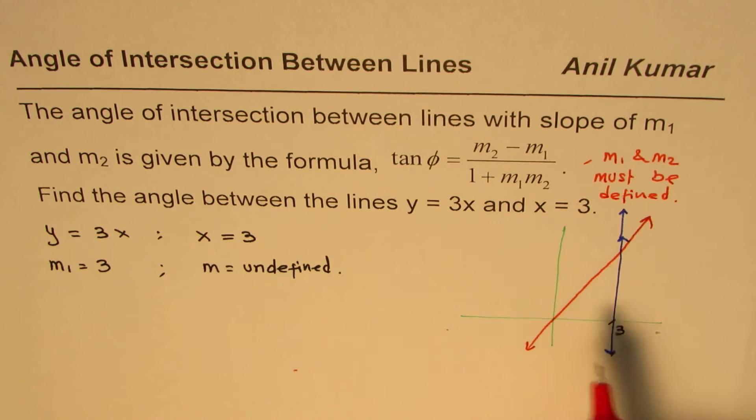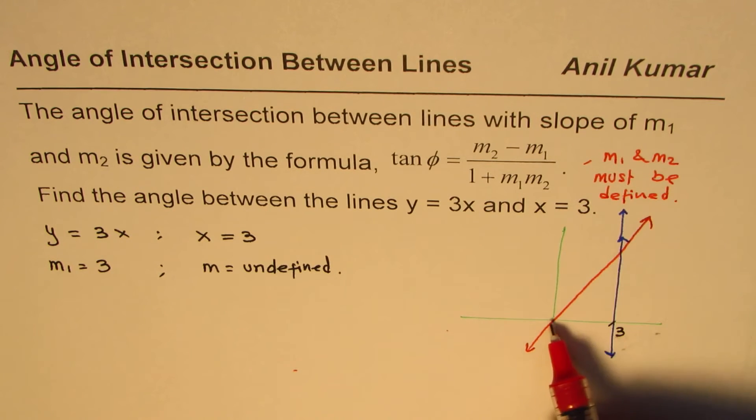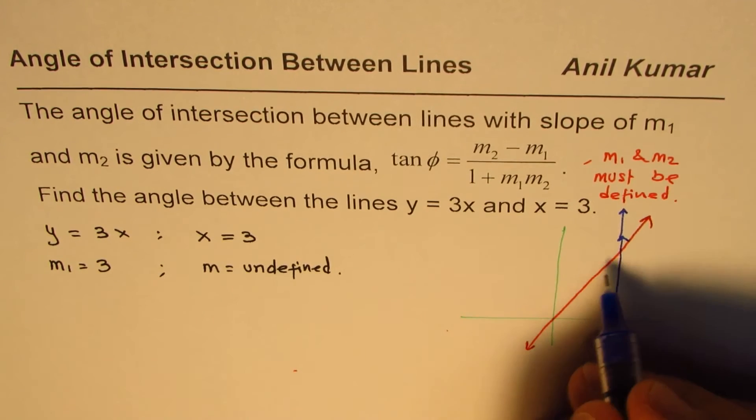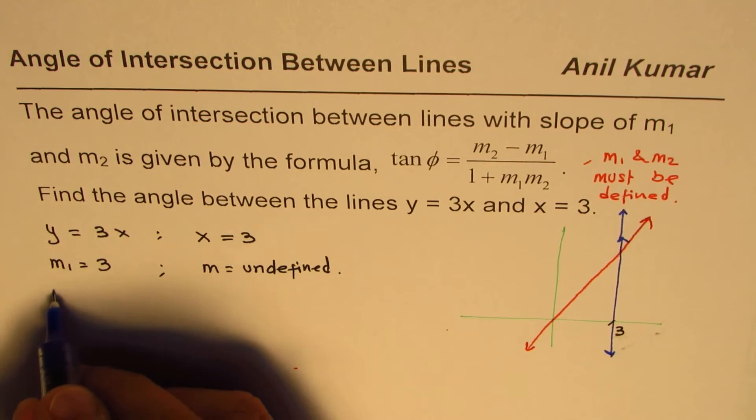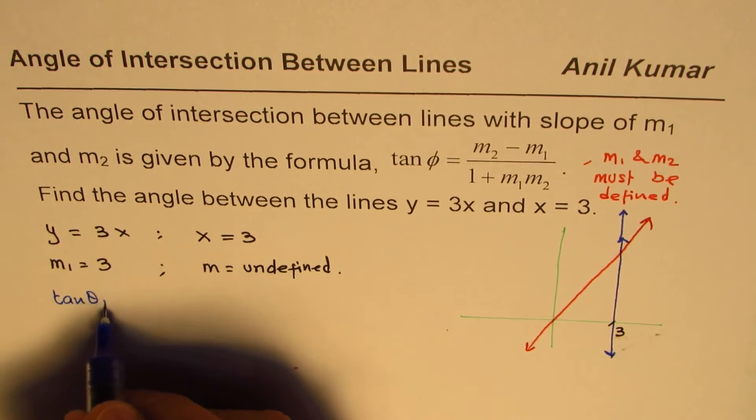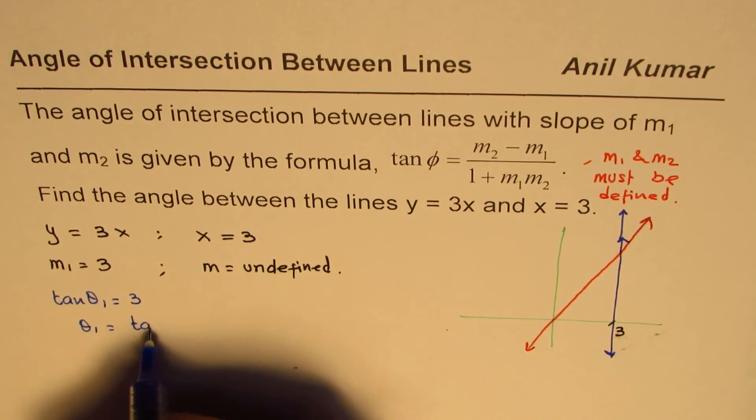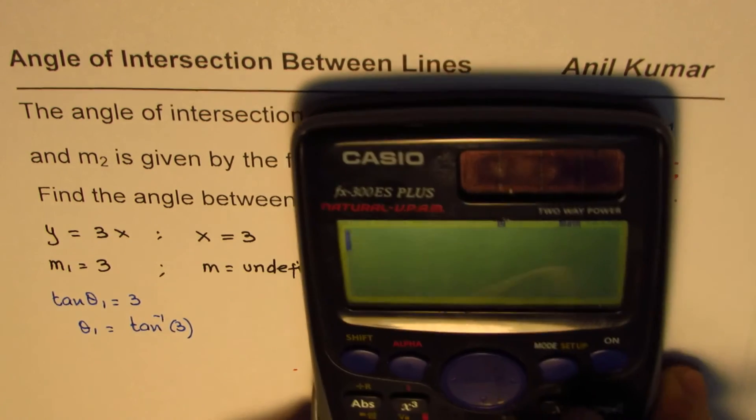So in that case, what is really happening is we can find the angle of the first line. So we know slope is 3. So basically, rise over run is 3. So we know tan theta 1 equals 3. So theta 1 is tan inverse of 3. Let us use the calculator to find this value.